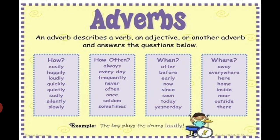So, these four types we have studied — adverbs describe a verb, an adjective, and another adverb, and answer the questions: how, how often, when, and where. We have these to answer: how did it happen, when did it happen, and where did it happen.